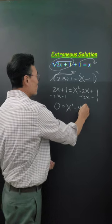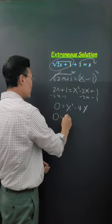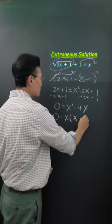So x squared minus 4x, factor out the x, giving us x times (x minus 4).